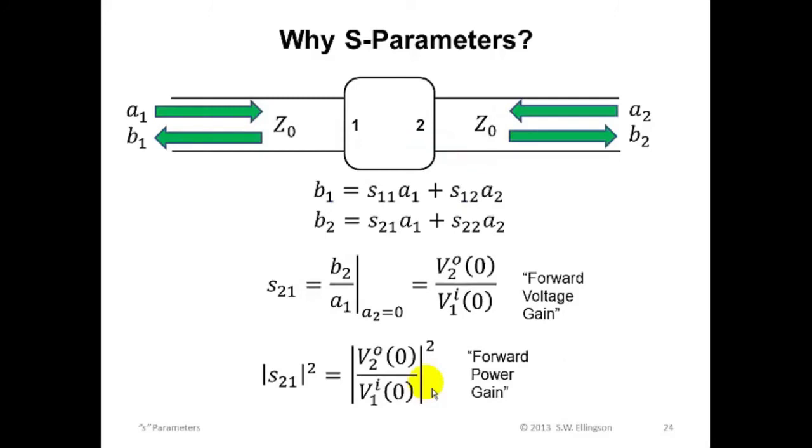The second reason why S-parameters are popular is that they have useful physical interpretations which are not apparent in the other parameter schemes. For example, the Z-parameter Z21 is just a coefficient. There's really not much more that you can say about it. However, we saw a few slides back that the S-parameter S21 is the ratio of the outbound voltage wave from port 2 to the inbound voltage wave at port 1. This is a description of the forward voltage wave of the two port.